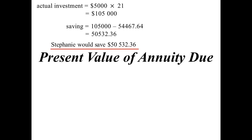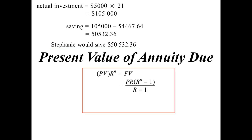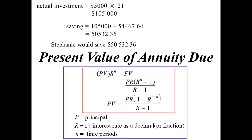So the present value of an annuity due — we can derive a formula for that. The present value times R^N must equal the future value, giving us: PV = PR(1 − R^(−N))/(R − 1), where P is the principal, R is the interest rate factor, and N is the number of time periods.